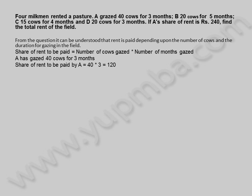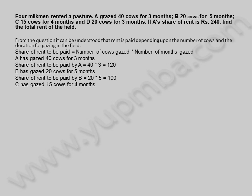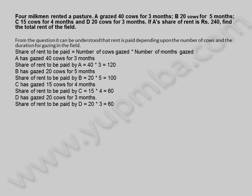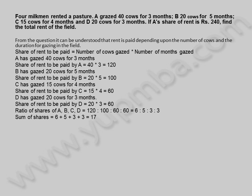A has grazed 40 cows for three months, share of rent to be paid by A is 40 × 3 = 120. B has grazed 20 cows for five months, share of rent to be paid by B is 20 × 5 = 100. C has grazed 15 cows for four months, share of rent to be paid by C is 15 × 4 = 60. D has grazed 20 cows for three months, share of rent to be paid by D is 20 × 3 = 60. Ratio of shares A : B : C : D = 120 : 100 : 60 : 60, which simplifies to 6 : 5 : 3 : 3.